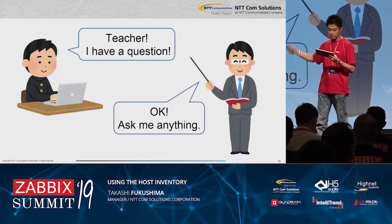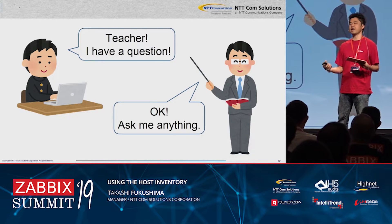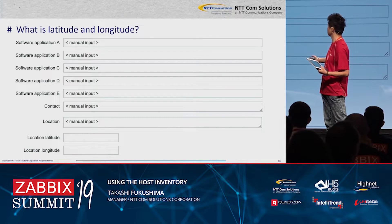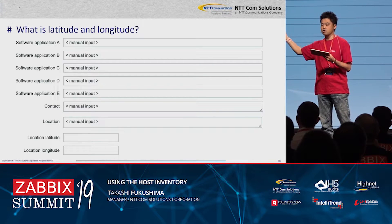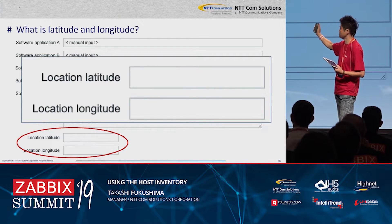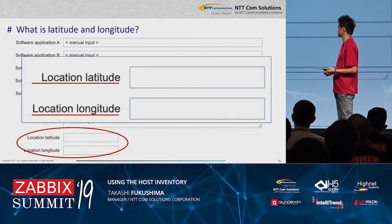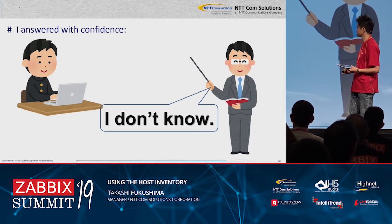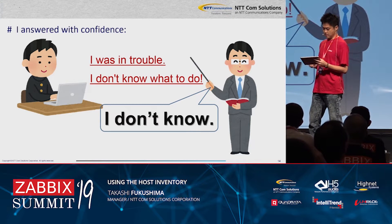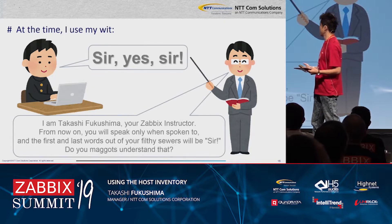So students will ask further questions. A student asked: 'Teacher, what is latitude and longitude?' — referring to those inventory fields. Location latitude, location longitude. I always answer with confidence: 'I don't know.' At the time I used my wit — I am a smart man.